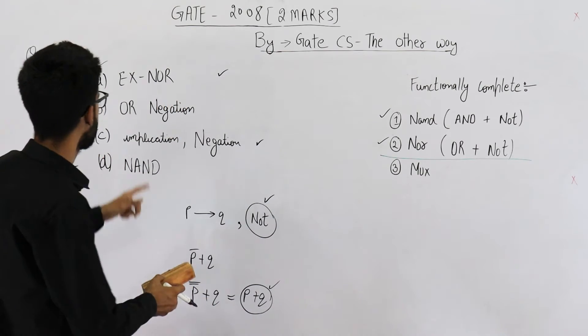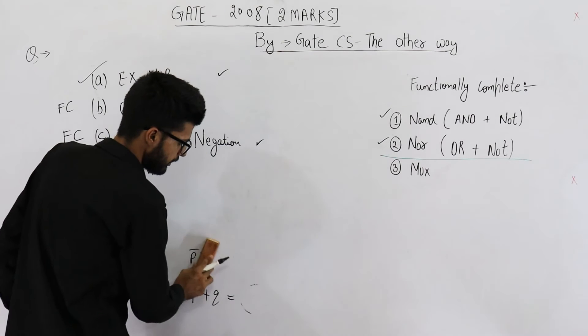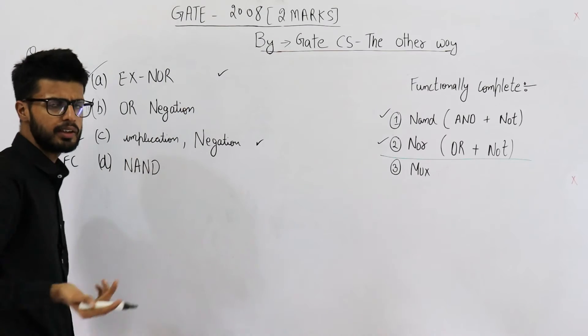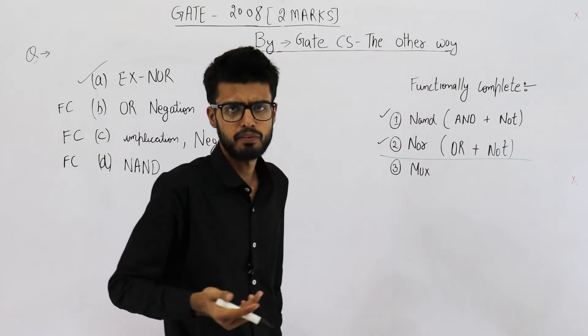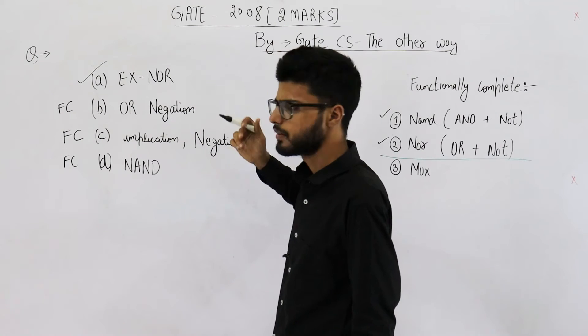Now if you want to prove option A is functionally incomplete, we can do that easily. First of all, this one is a linear function. A linear function can never be functionally complete, so it's proved from here also.